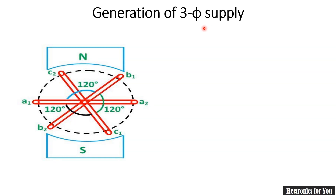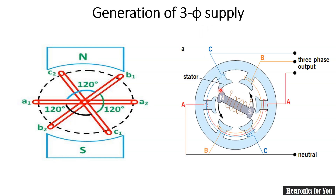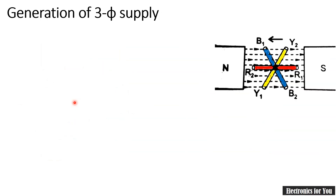Another way to generate three phase supply is by rotating a magnet in three different coils. Here A, B and C are three different coils and the magnet is rotated within these coils, and again a three phase EMF can be generated. For simplification, we will consider the diagram where three different conductors are rotated.